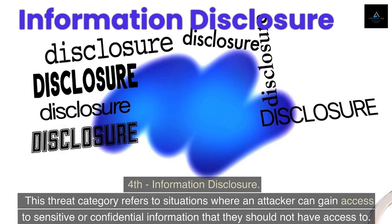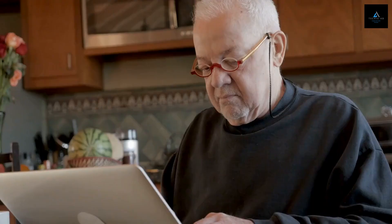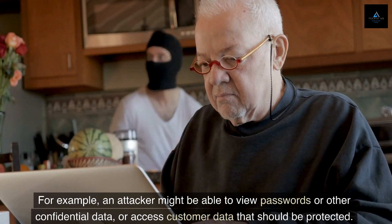Fourth: Information Disclosure. This threat category refers to situations where an attacker can gain access to sensitive or confidential information that they should not have access to. For example, an attacker might be able to view passwords or other confidential data, or access customer data that should be protected.